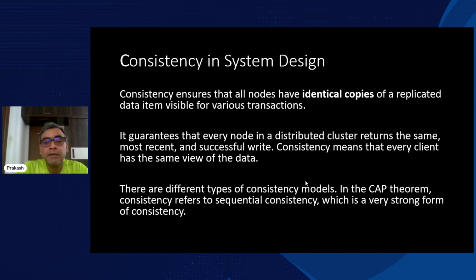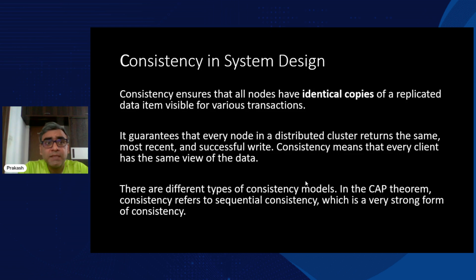What consistency tells us in CAP is that all nodes should have identical copies. If there are hundreds of users getting data, irrespective of which node they hit through the load balancer, they should be getting the same data. This is especially critical in industry systems like finance, where data accuracy matters a lot regardless of which device or location the user is accessing from.